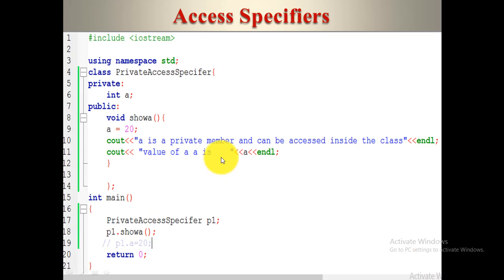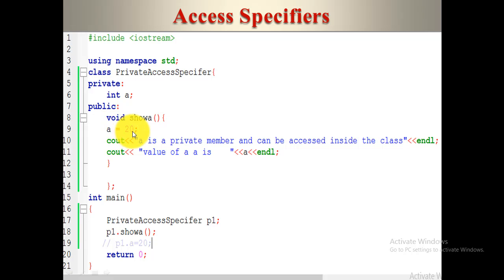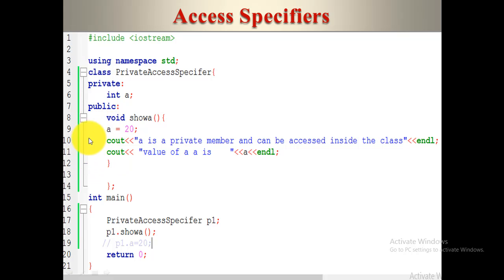Let's understand it with an example. We created a class and in the private section we created a variable A — it is a private member. In the public section we created a function, and in that function we assign the value 20 to A. Can we access a private member in the public section of the same class? Yes. We can access variable A, which is private, inside the same class. We also print two statements: the value of A, and that A is a private member accessible inside the class.